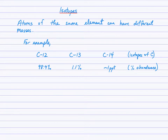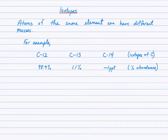Let's consider carbon. Atoms of carbon can have a mass number of 12, 13, or 14 — those are the three isotopes of carbon. You can see the percent abundance, or isotopic abundance, provided here: 98.9% of all carbon atoms are carbon-12, 1.1% are carbon-13, and approximately one in every trillion atoms of carbon has a mass of 14. Graphite in your pencil is made of pure carbon.